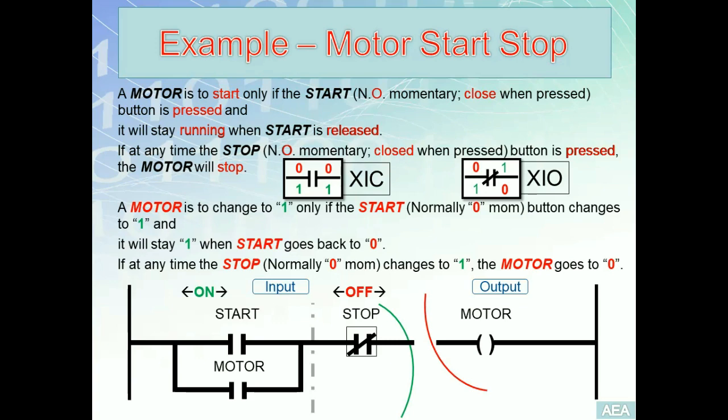That's your solution. After dividing the problem into minor requirements and solving each one, we've figured out the full ladder solution. We can now complete the rung — that's the solution for this problem. I'm going to demonstrate this solution on the software to double-check that our analysis is correct and that all the instructions placed in our solution are the proper instructions.